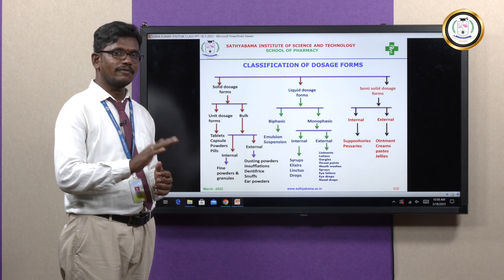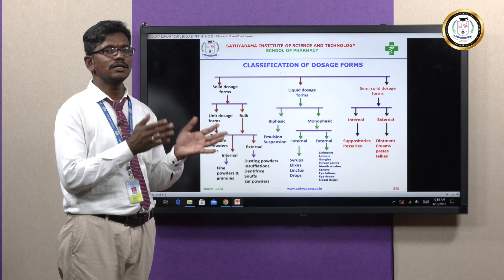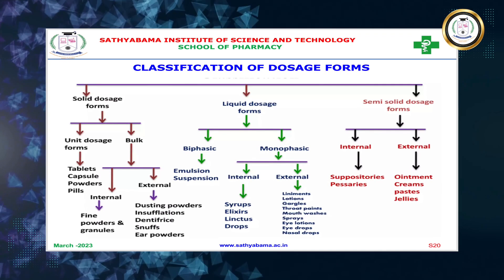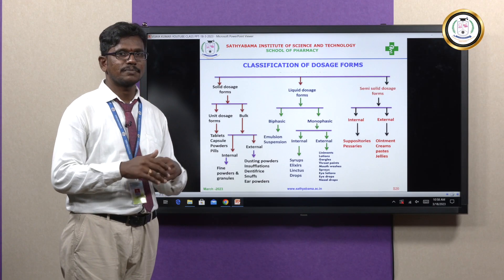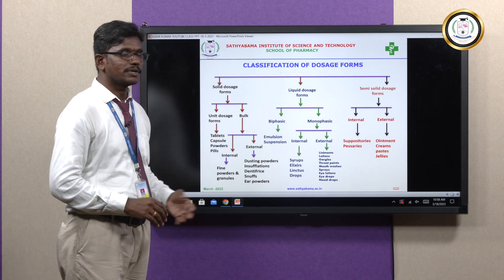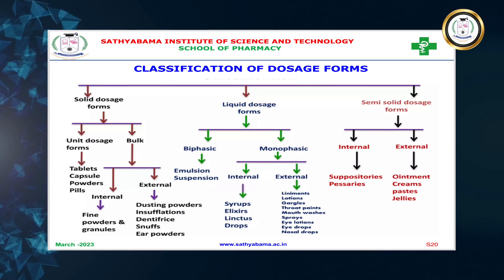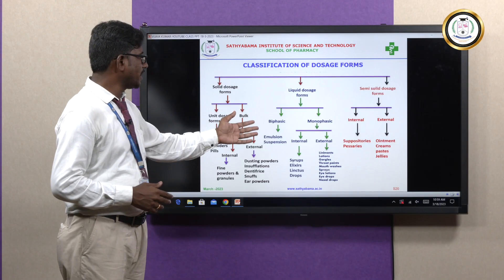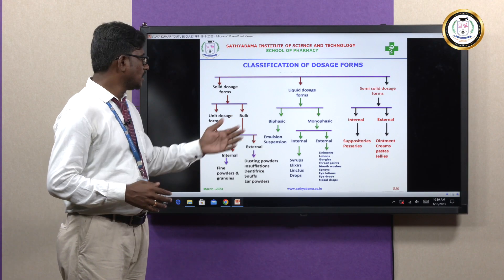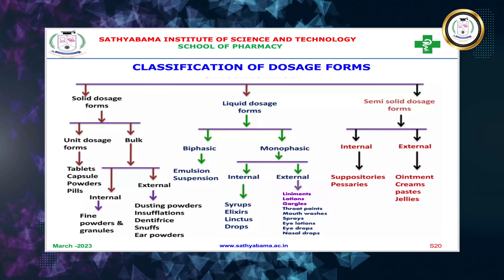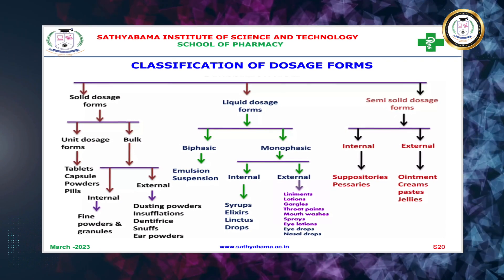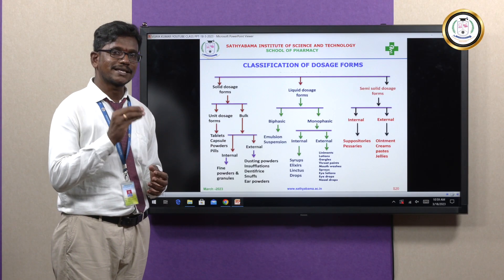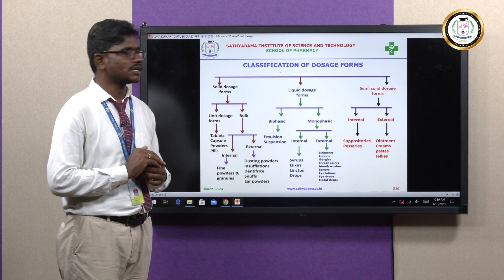Monophasic liquid dosage forms are further divided into two types based on the mode of administration: internally administered and externally administered. Internally administered examples are syrups, elixirs, linctuses, and pediatric drops. Externally applied examples are lotions, liniments, gargles, throat paints, mouthwashes, sprays, eye lotions, eye drops, and nasal drops — all these come under the externally administered monophasic liquid dosage form.